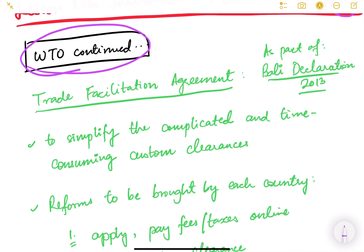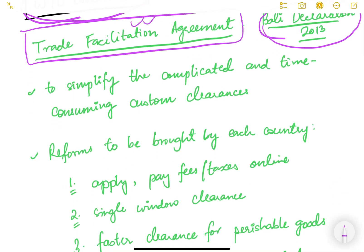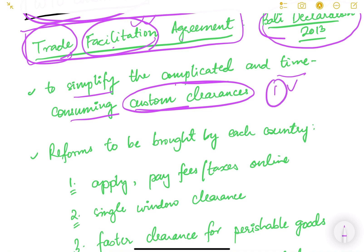In the previous video we talked about the Bali Ministerial Conference. As part of the Bali Declaration 2013, the Trade Facilitation Agreement (TFA) was one of the key outcomes. Here we'll see what exactly the TFA is. The name itself says it all — it is an agreement which will facilitate international trade, meaning it will simplify and make it easier for international trade to happen. Basically, countries have to simplify the complicated and time-consuming custom clearance processes, reduce bureaucratic hindrances, and reduce clearance time.